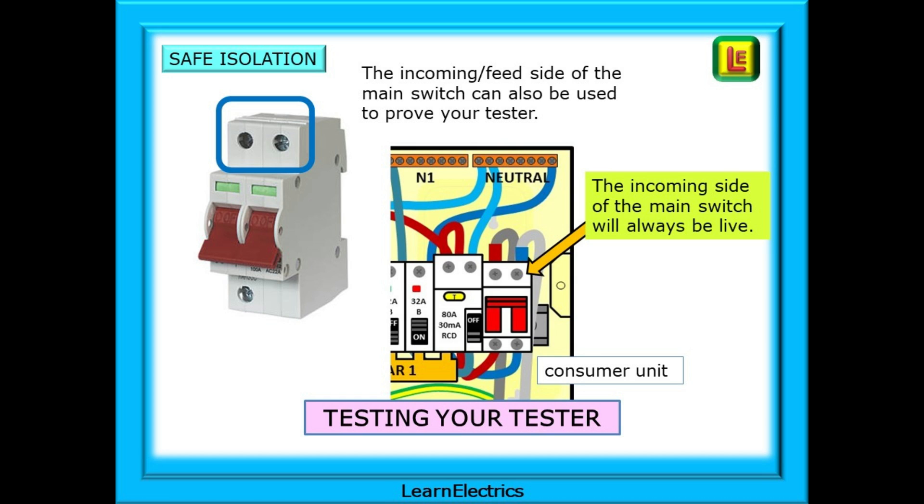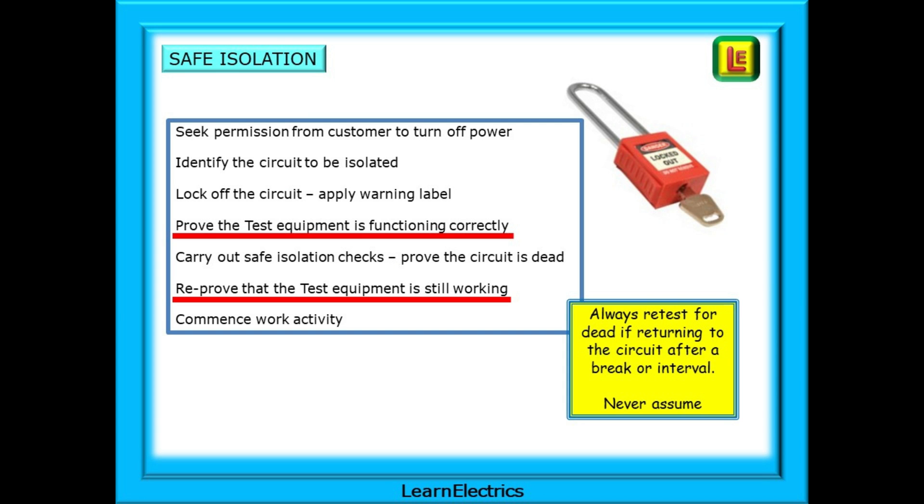The safe isolation procedure shown below is the minimum that you should be doing. On some industrial sites you may have to complete a permit to work form, or you may be provided with one. For a domestic setting, start with asking permission from the customer to turn off the power. The customer must expect some disruption. After all, they have asked you to visit to carry out the work.